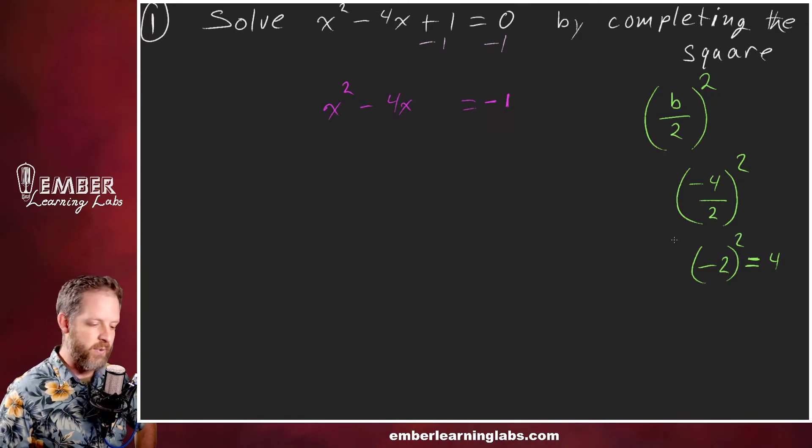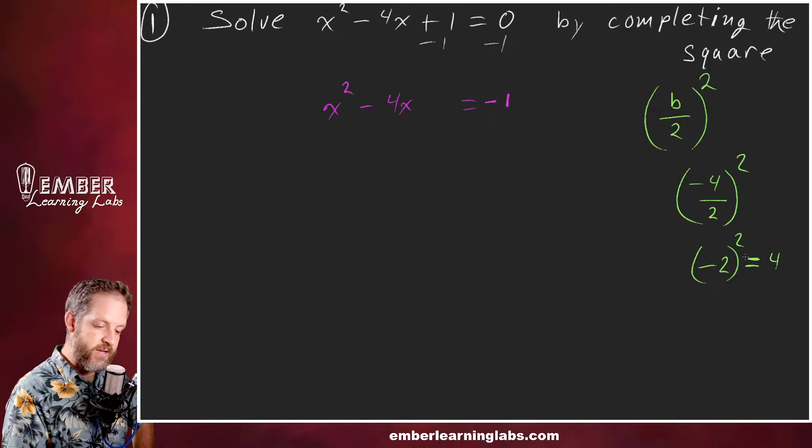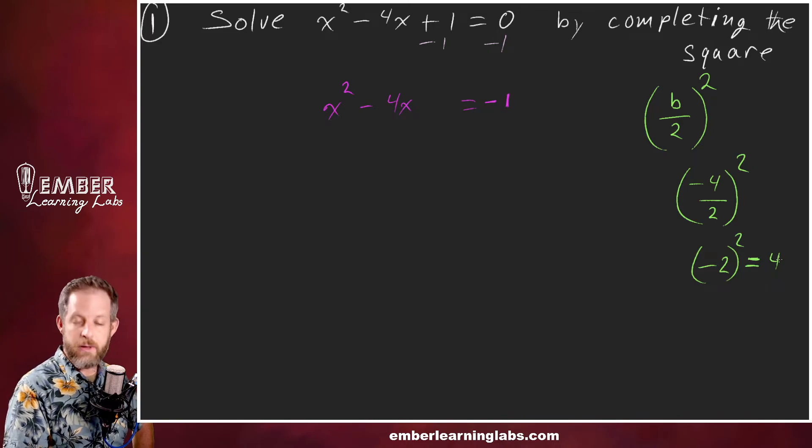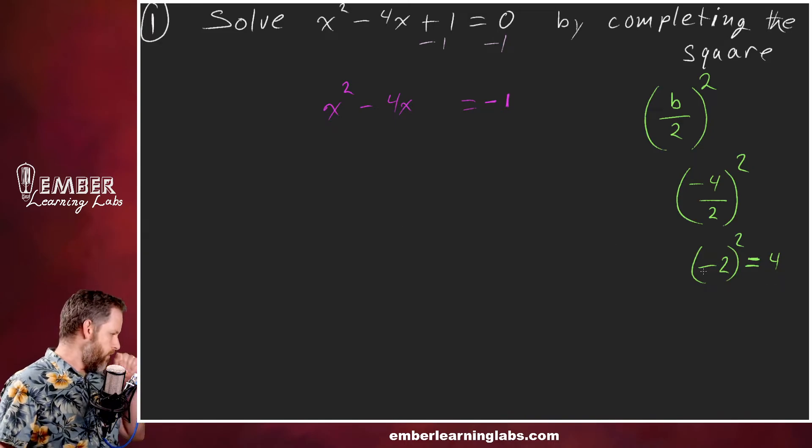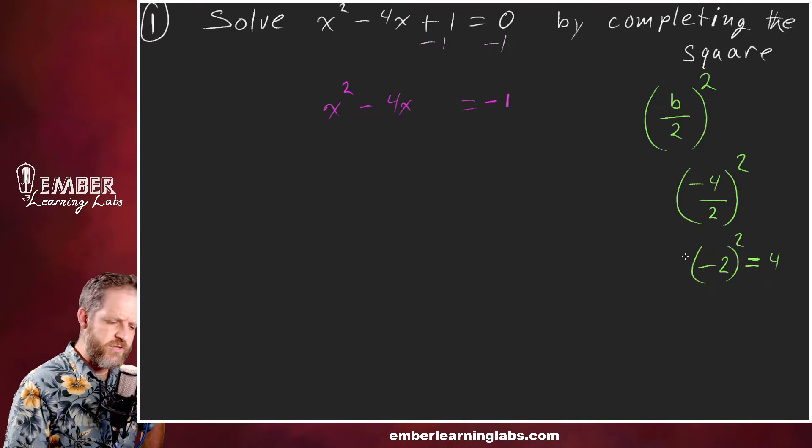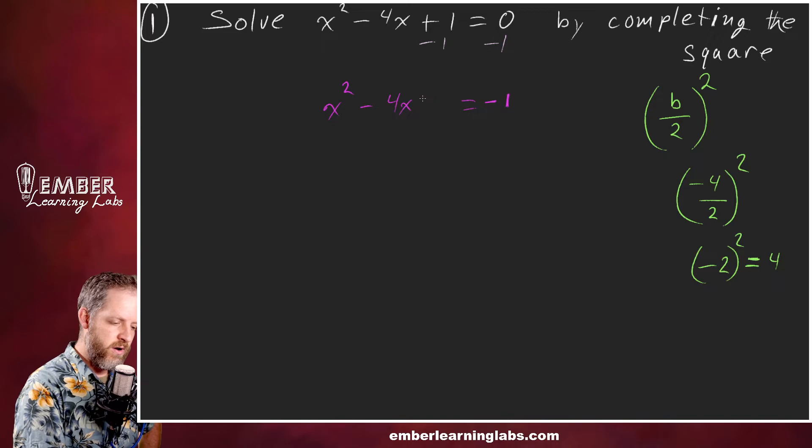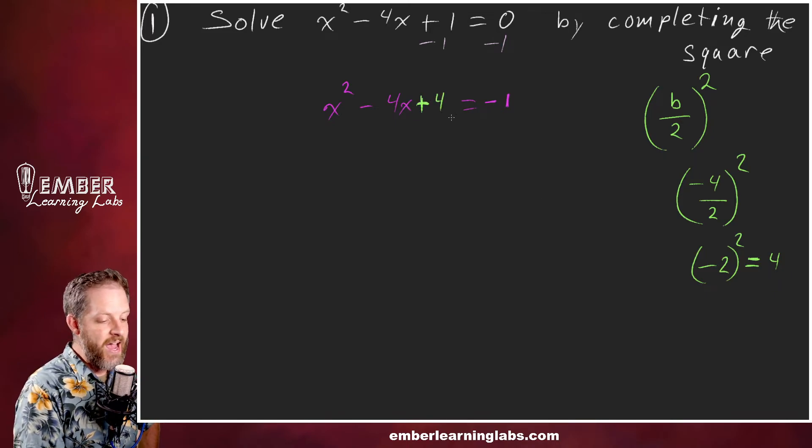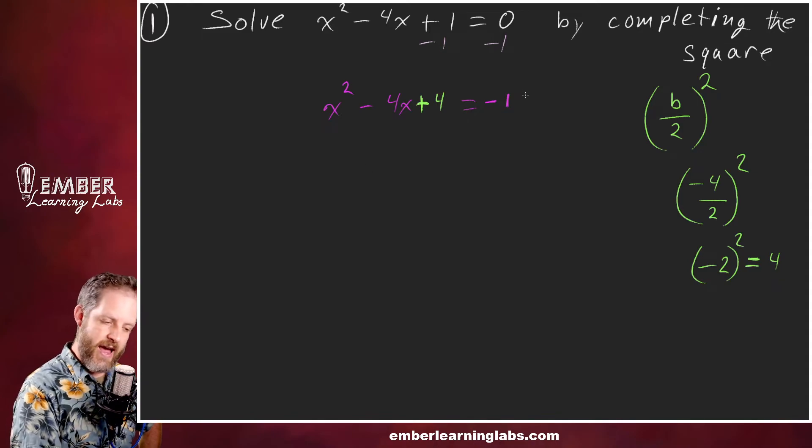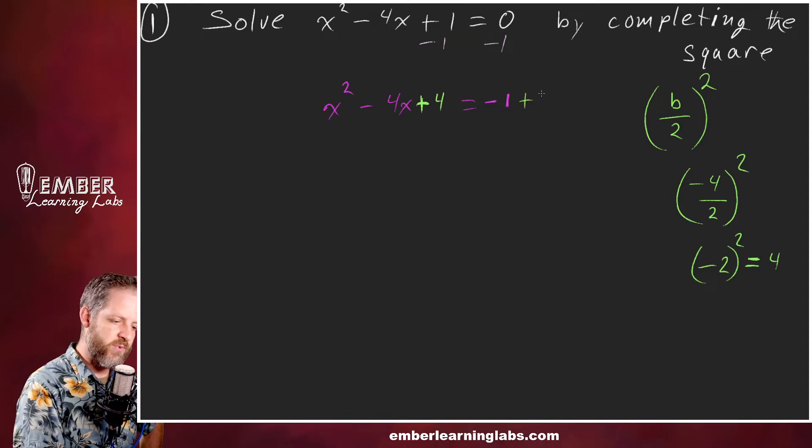It's always going to be positive, always plus here. So we need to add 4 to this side of the equation, and if we add 4 to this side, we got to add 4 to this side as well.